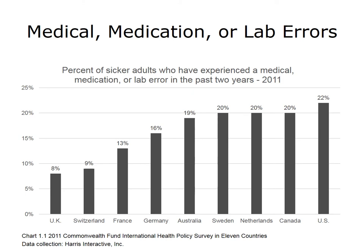In 2011, the Commonwealth Fund surveyed 18,000 adults 18 years and older in 11 countries, including the United States. Adults were considered sicker if they rated their health as fair or poor, reported receiving medical care for serious chronic illness, injury, or disability, had surgery, or had been hospitalized in the past two years. The 11 countries are considered high-income, that is, they look a lot economically like the United States. As this slide shows, sicker adults in the U.S. are more likely to report a medical error compared to adults in the other countries.